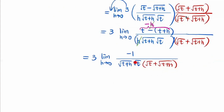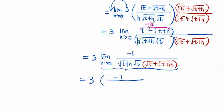Now we can substitute 0 into h and see what happens. We can now do direct substitution. When h equals 0, square root of t plus h becomes square root of t. So the numerator becomes negative 1, and the denominator has square root of t times square root of t, plus another square root of t — giving us two square root of t terms.